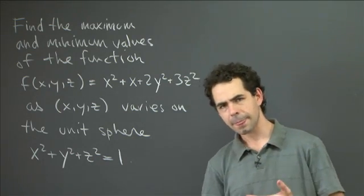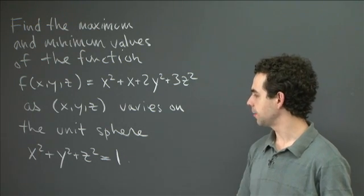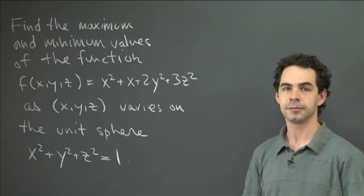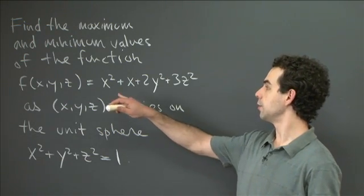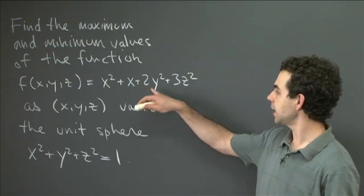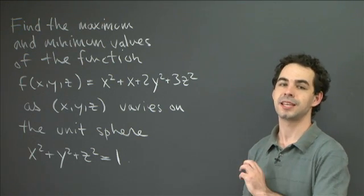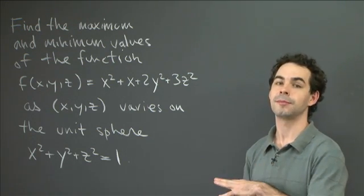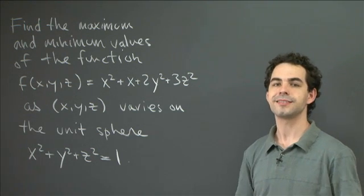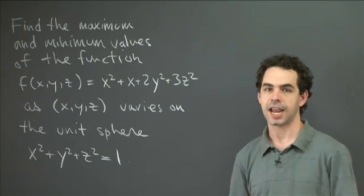Let's have a go at it. So remember that the method of Lagrange multipliers says that when you have a function being optimized on some constraint condition, to find the points where the function could be maximum or minimum, you first look for points where the gradient of your objective function is parallel to the gradient of your constraint function. So you take the partial derivatives fx, fy, fz, and you say fx has to equal lambda times gx, fy has to equal lambda times gy, and fz has to equal lambda times gz for some lambda. And then you solve that system together with the constraint equation. The solutions of that system are the points you have to check for whether they're the maximum or the minimum.